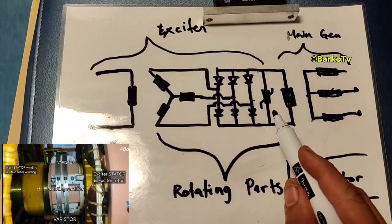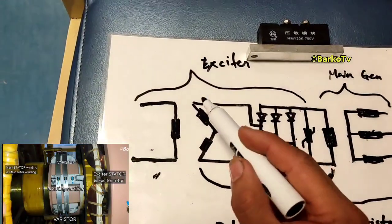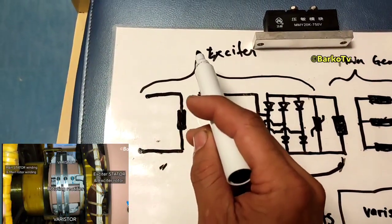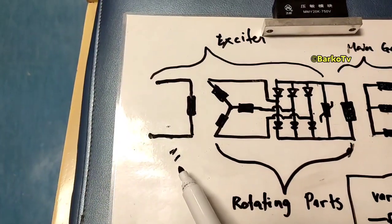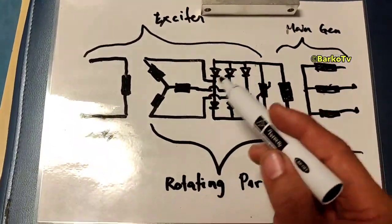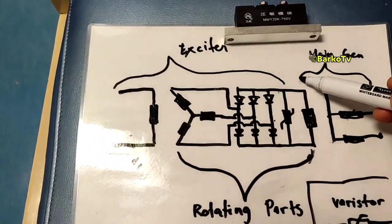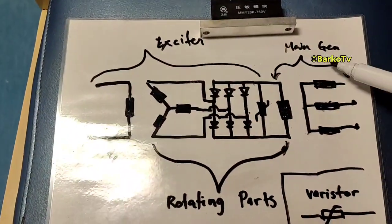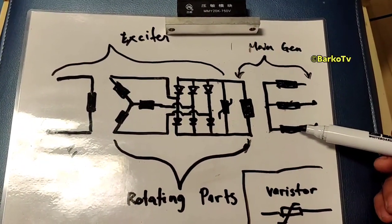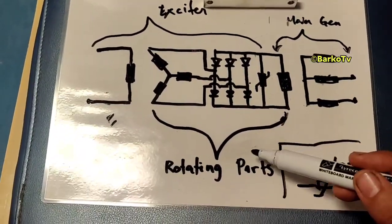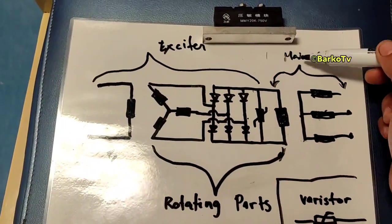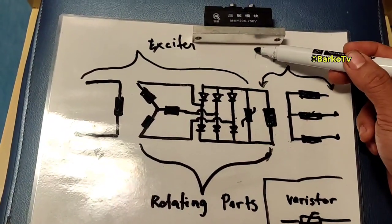This is the symbol of varistor which is located in the rotating parts. This is the rotating parts and then this is the exciter. This is the stator and the exciter, but this part only the rotating parts. And then this is the main generator windings. This is the stator and this is the winding connected to the rotating parts which belongs to the main generator parts like this.